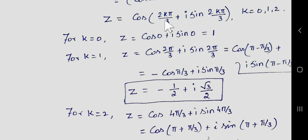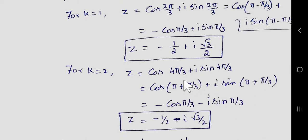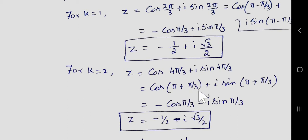For k = 2, we get cos(4π/3) + i·sin(4π/3). Split 4π/3 as π + π/3, which is in the third quadrant (180 + θ form). In the third quadrant both cos and sin are negative, so we get −cos(π/3) − i·sin(π/3) = −1/2 − i·(√3/2).